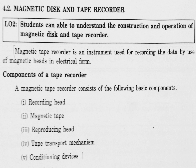Now we are moving on to magnetic disk and tape recorder. Magnetic tape recorder is used to record the information in terms of graphical format, that is magnetic pattern. It consists of the following components: recording head, magnetic tape, reproducing head, tape transfer mechanism, and conditioning devices.